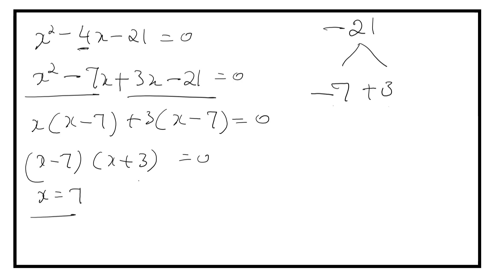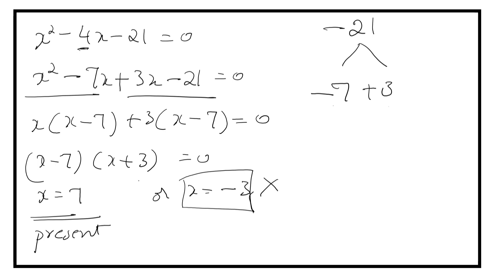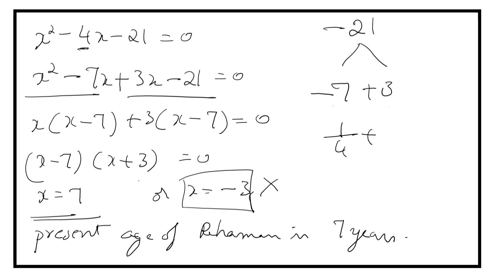So X is equal to 7 or X is equal to minus 3. But X equals minus 3 is not possible since this is the age of Rahman, and age cannot be a negative value. So the present age of Rahman is 7 years. We can verify: 7 minus 3 is 4, and 7 plus 5 is 12. 1 by 4 plus 1 by 12 equals 3 by 12 plus 1 by 12 equals 4 by 12, which is 1 by 3. Our answer is correct.